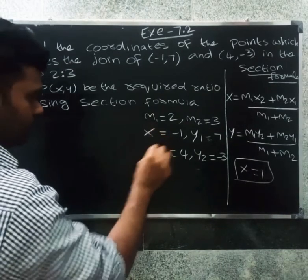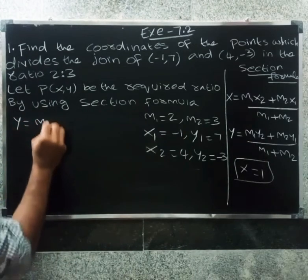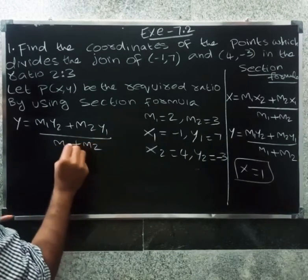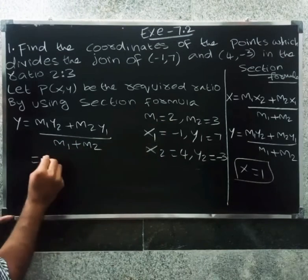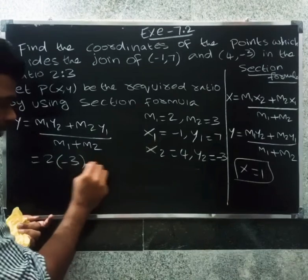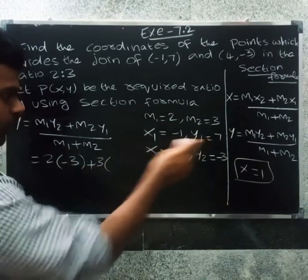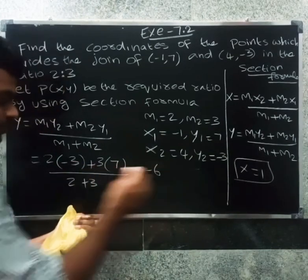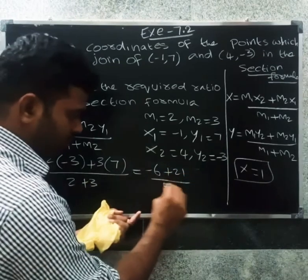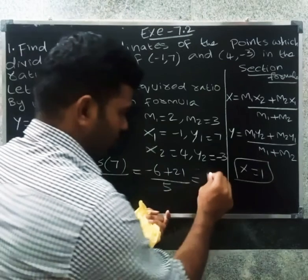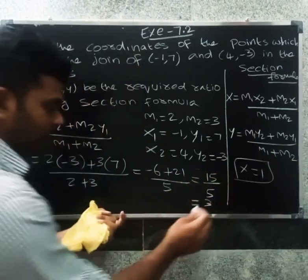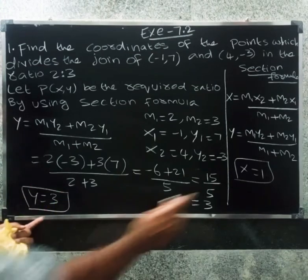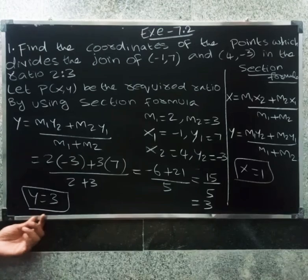y = (m1·y2 + m2·y1) / (m1 + m2) = (2×(-3) + 3×7) / (2+3) = (-6 + 21) / 5 = 15/5 = 3. So y = 3. The required point is (1, 3).